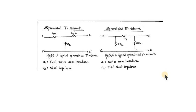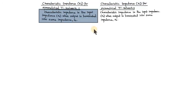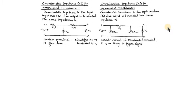Now we will look at the derivation of characteristic impedance Z0. The characteristic impedance derivation will be carried out here. Before that, we will define what we mean by characteristic impedance. Characteristic impedance is the input impedance Z0 when the output is terminated into the same impedance Z0. Let's look into the circuit to understand it better.